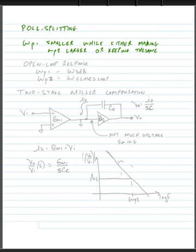So in this case, for our open loop response, our omega p1 frequency will equal the 3 dB frequency for our amplifier, or the half power frequency. And we'll set omega p2 equal to our omega for the closed loop response.